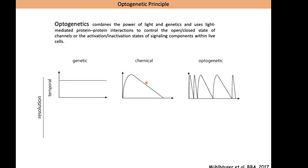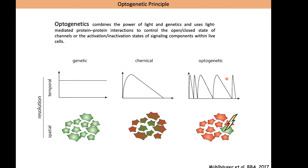Optogenetics combines the precision and power of light with genetics. For a long time in our labs we have used genetics and chemicals to manipulate pathways, but this approach has very low temporal resolution. Genetics gives long-term modifications, and chemicals give acute effects. With optogenetics, we can combine both aspects — performing acute stimulation and repeating it over a long time, giving us temporal resolution never achieved before.